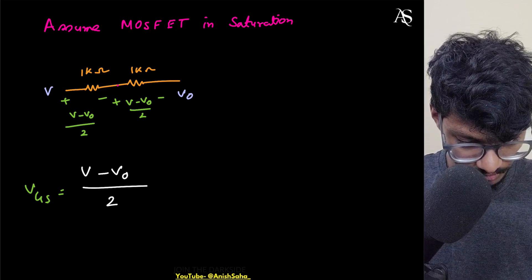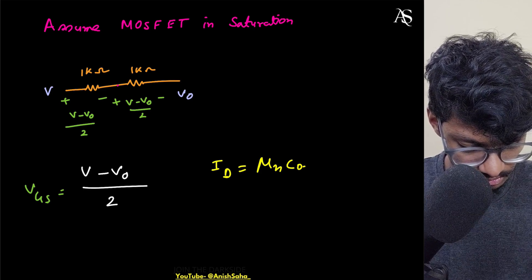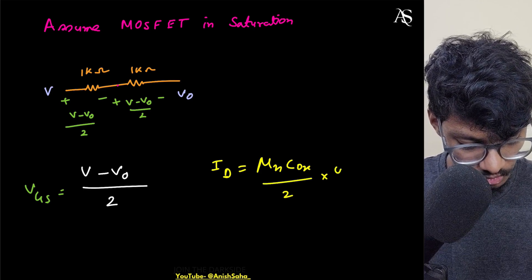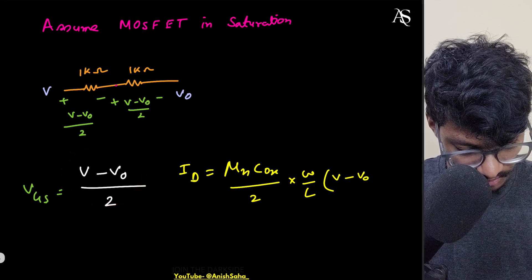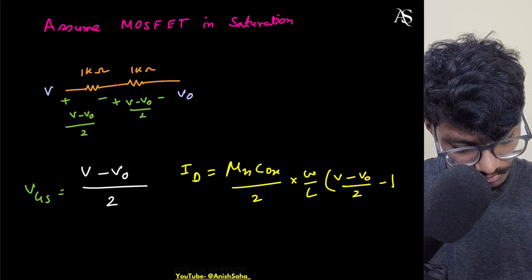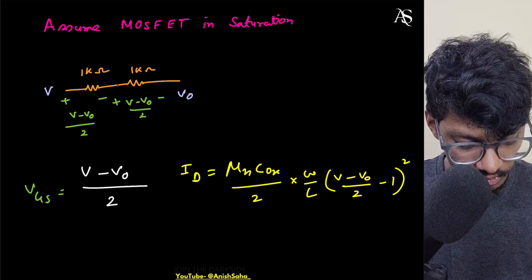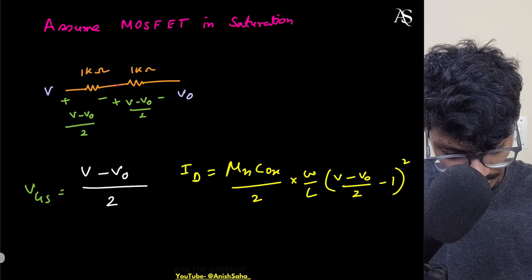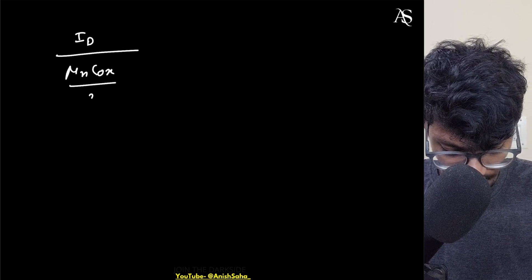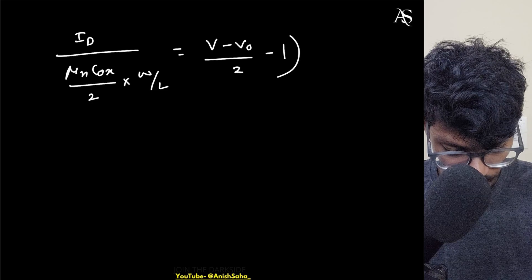Now for the drain current ID in saturation: ID = (μn·Cox/2)·(W/L)·(VGS − Vth)². So ID = (μn·Cox/2)·(W/L)·((V − Vo)/2 − 1)². Rearranging, ID divided by (μn·Cox/2·W/L) equals ((V − Vo)/2 − 1)².